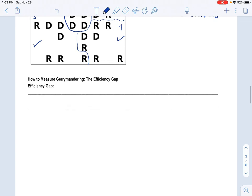All right, so let's see how we can measure gerrymandering, and that is known as the efficiency gap. The efficiency gap is a measure of the advantage one party has over another party.